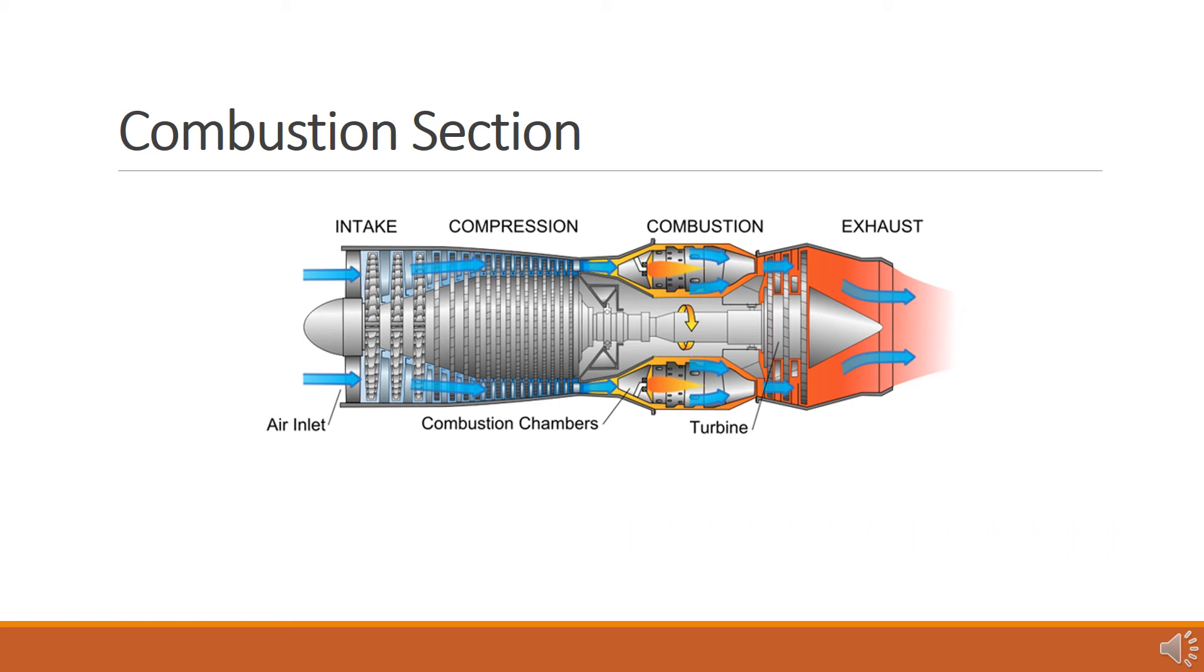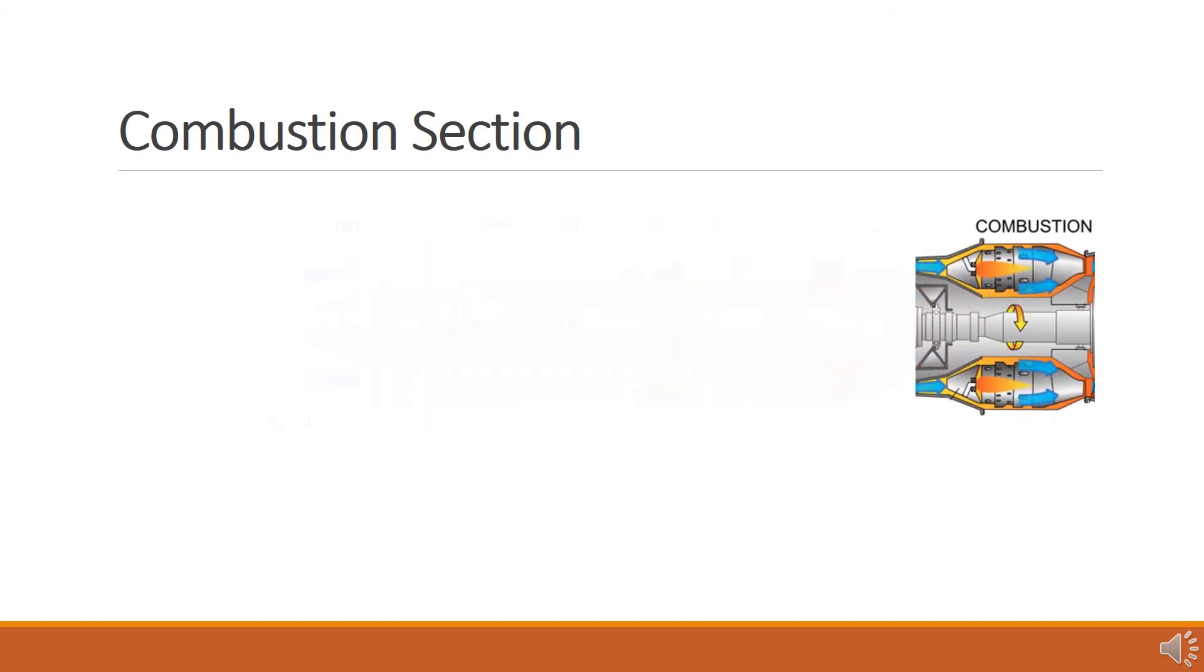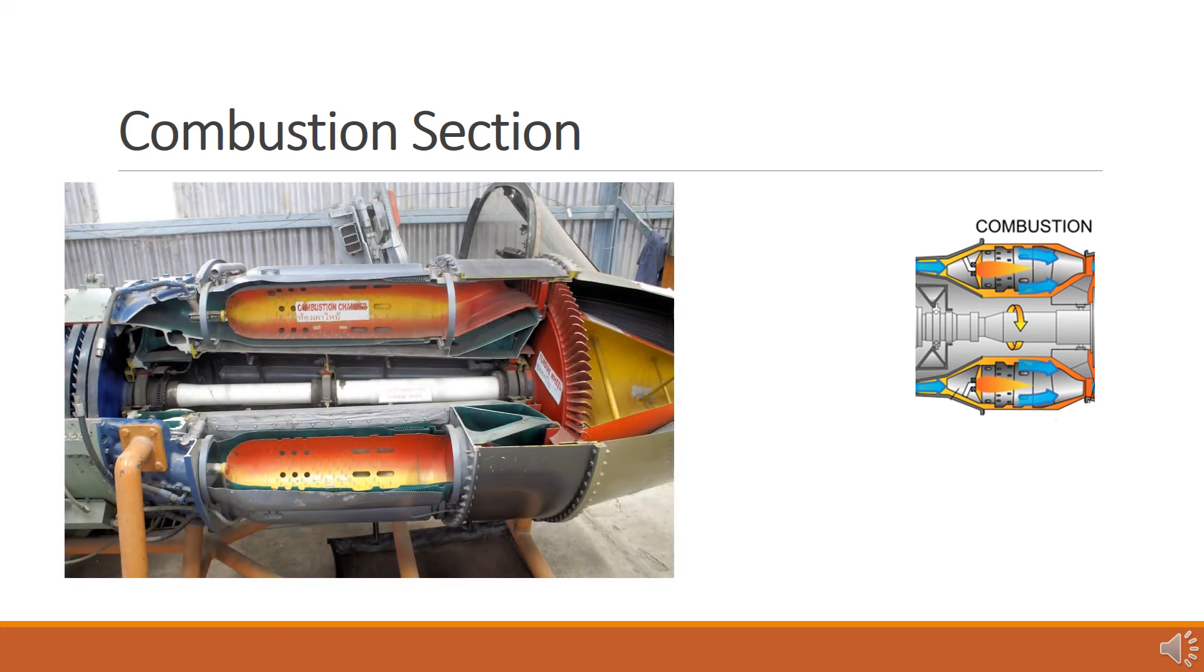A combustor is the component or area of a jet engine where combustion takes place. It is also known as a burner, combustion chamber or flame holder. In a gas turbine engine, the combustion chamber is fed high pressure air by the compression system. Fuel is mixed with the compressed air and ignited which causes the fuel air mixture to heat and expand. Fuel is burned continuously after initially being ignited during engine start. The objective of the combustor in a gas turbine is to add energy to the system to power the turbines and produce a high velocity gas through the exhaust nozzles.